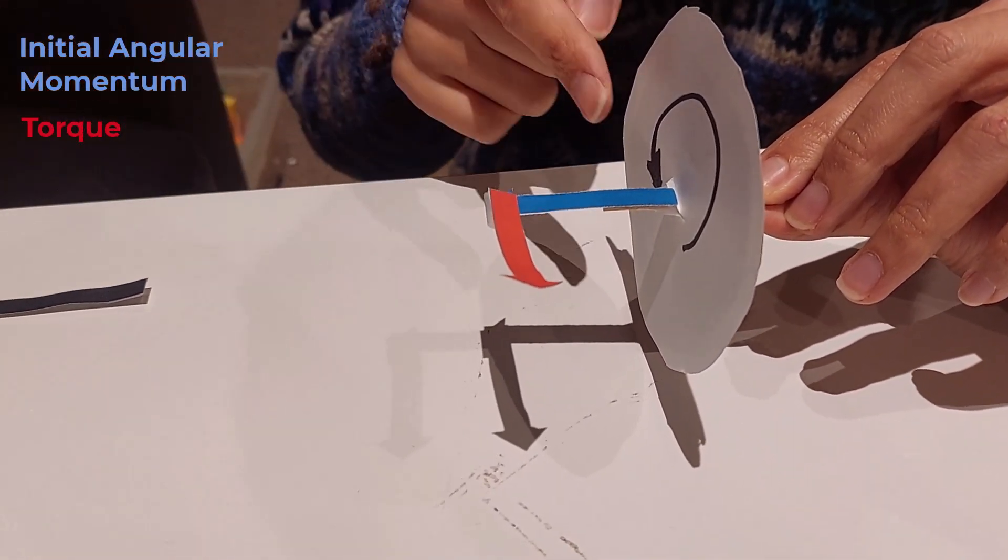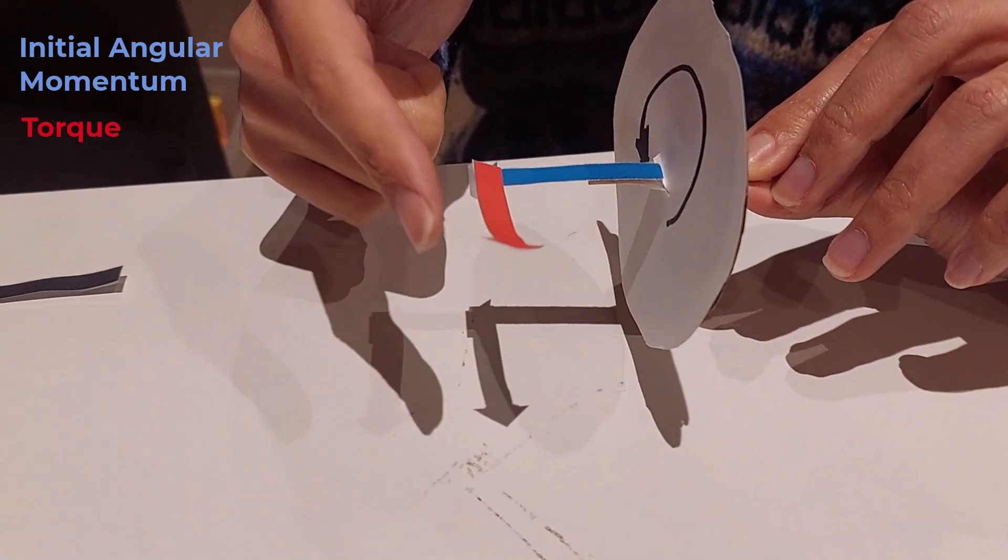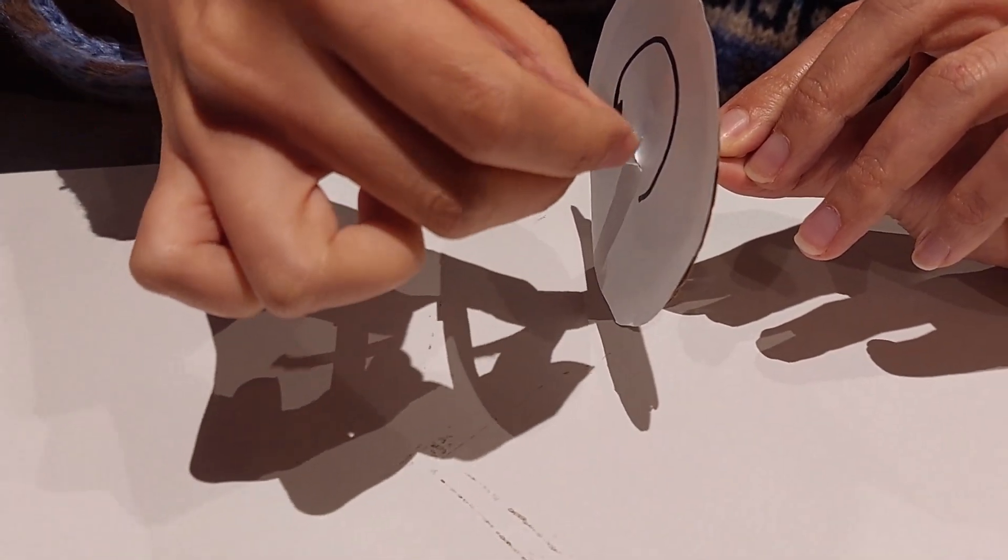which means that we go from the beginning of the first arrow to the tip of the second arrow, which is indicated by this black arrow here.